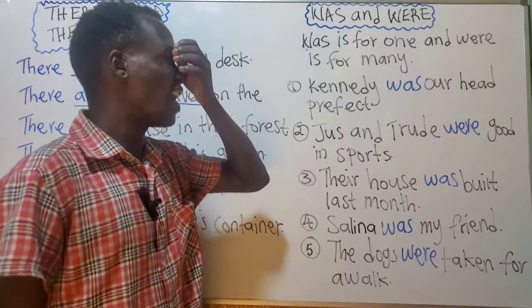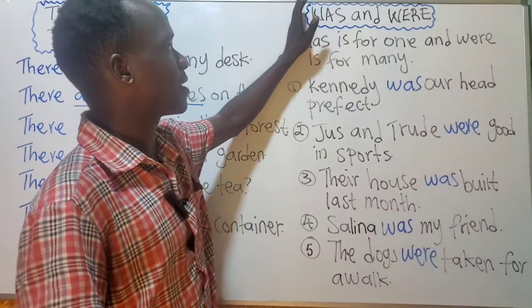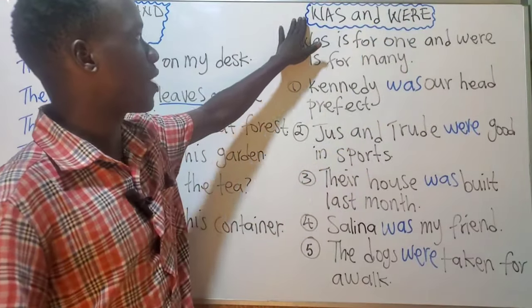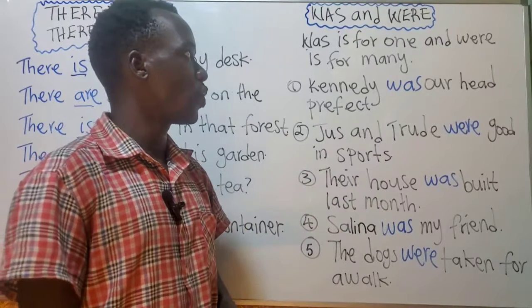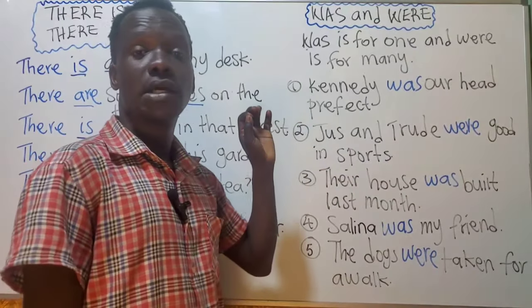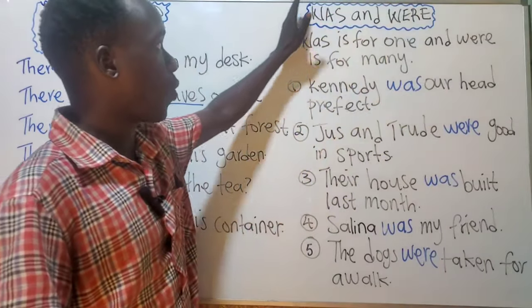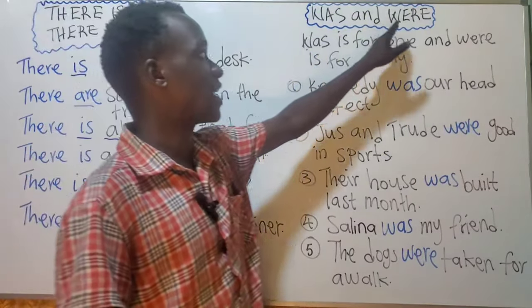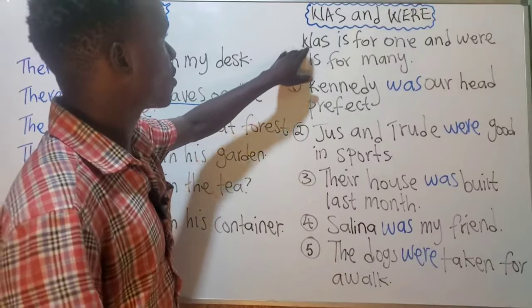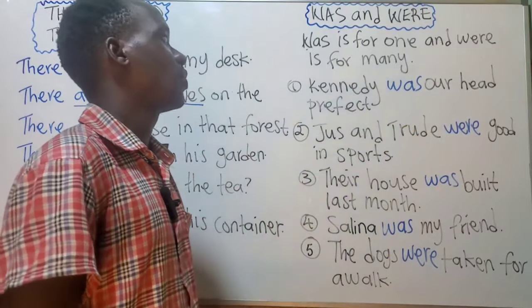Next we have 'was' and 'were.' These are used in the past simple tense. 'Was' is singular and 'were' is plural, but both talk about the past — what happened yesterday, last month, last week. You use 'was' or 'were': 'was' is for one and 'were' is for many.